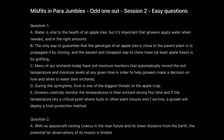Starting with question number one, which is talking about water. Sentence A says: 'Water is vital to the health of an apple tree, but it's important that growers apply water when needed and in the right amounts.' Sentence B says: 'The only way to guarantee that the genotype of an apple tree is close to the parent plant is to propagate it by cloning, and the easiest and cheapest way to clone apple trees is by grafting.' Now, we can see that both sentences mention apple trees, but they differ in idea.